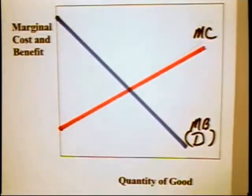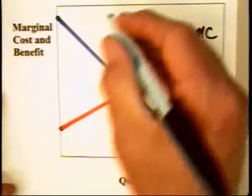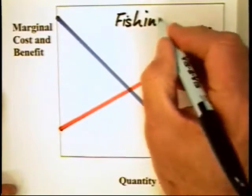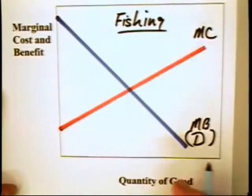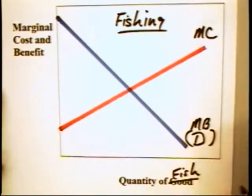You may recall our considering a graph that looks like this. In this case, we can say that the activity involved is fishing. That is, an individual wants to devote time to fishing, catching fish, or whatever. And we can put down here the quantity of fish that are caught.